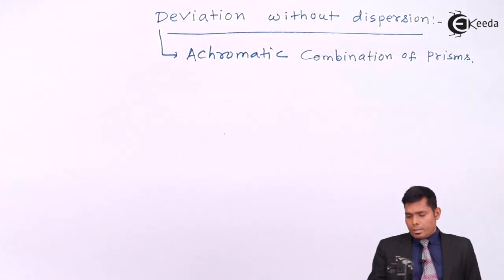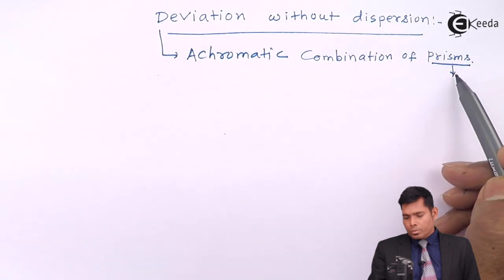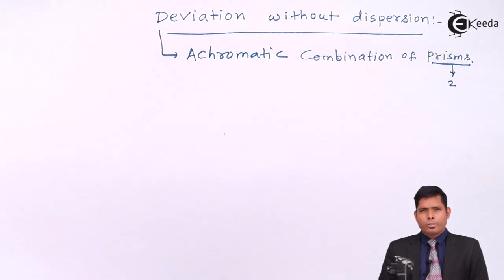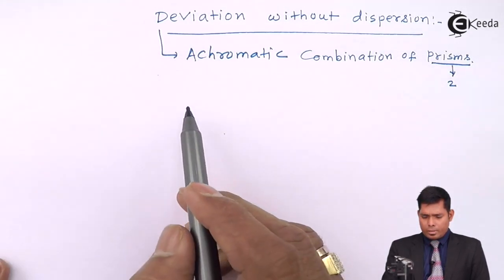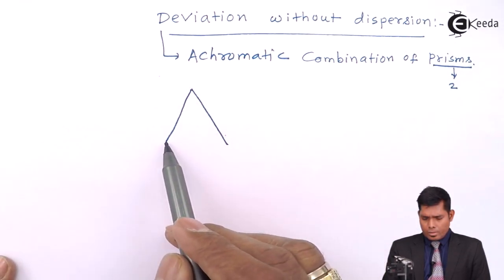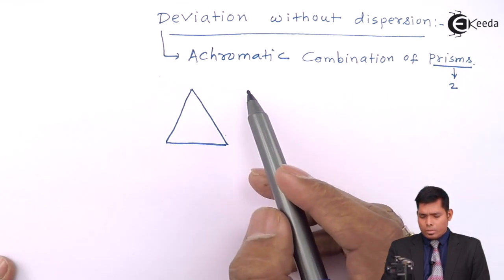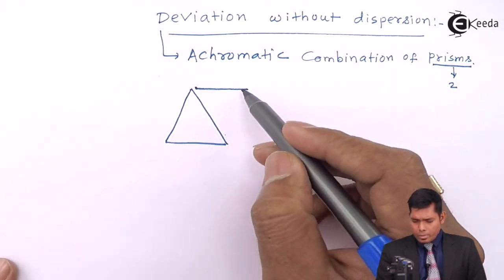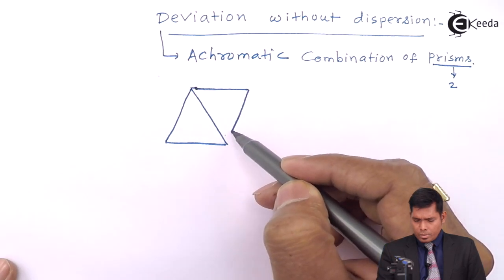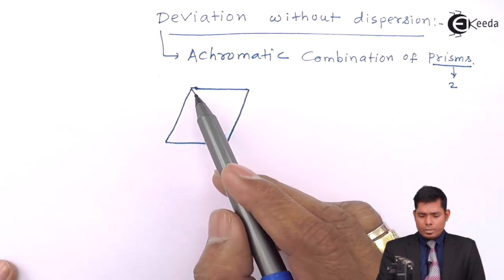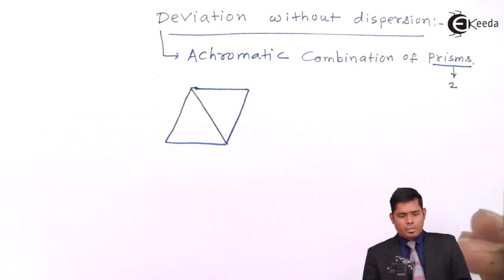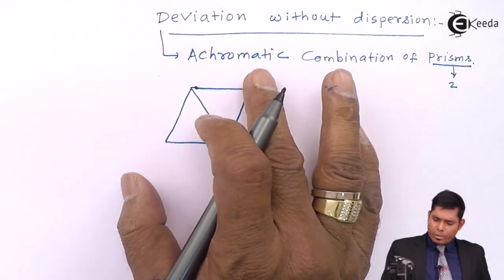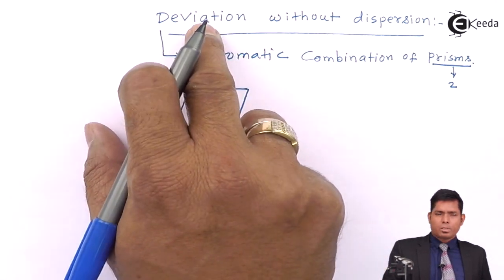As you can see here, there are two prisms we are going to use, because one cannot do such a thing. So we will use two and we will keep one inverted — one like this and the other one we will keep inverted like that. This is one prism and this is another prism; this prism is kept inverted. This combination is called achromatic combination.